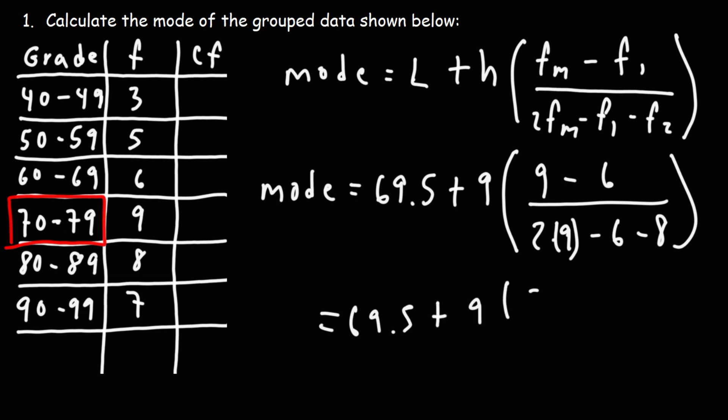9 minus 6 is 3. 2 times 9 is 18. 18 minus 8 is 10. 10 minus 6 is 4. You know what? I need to correct something.